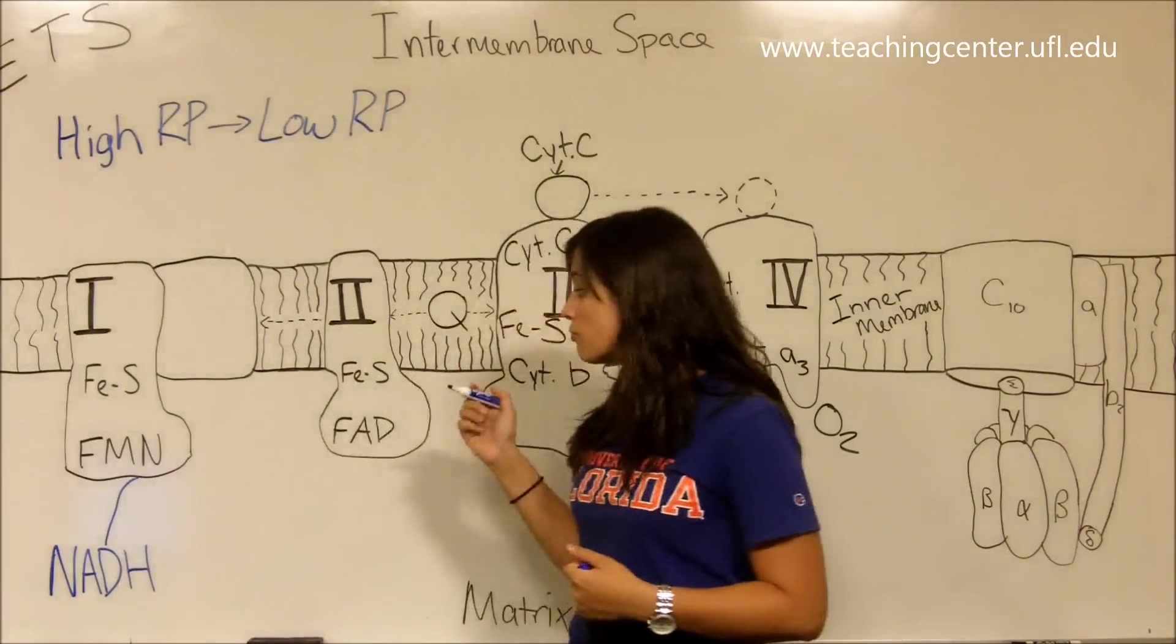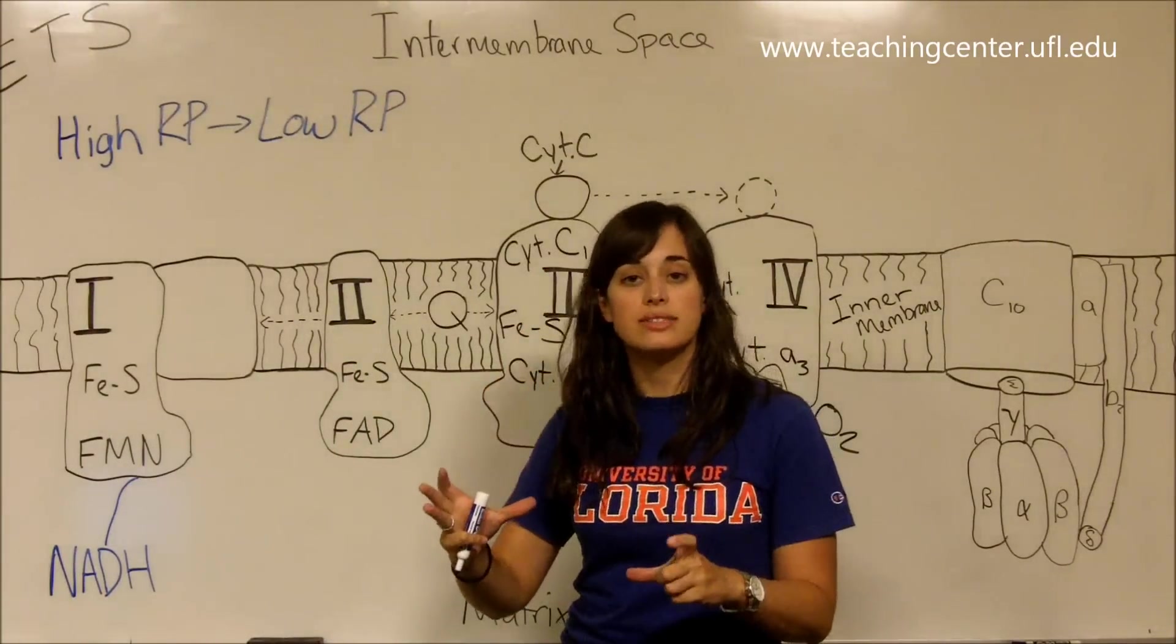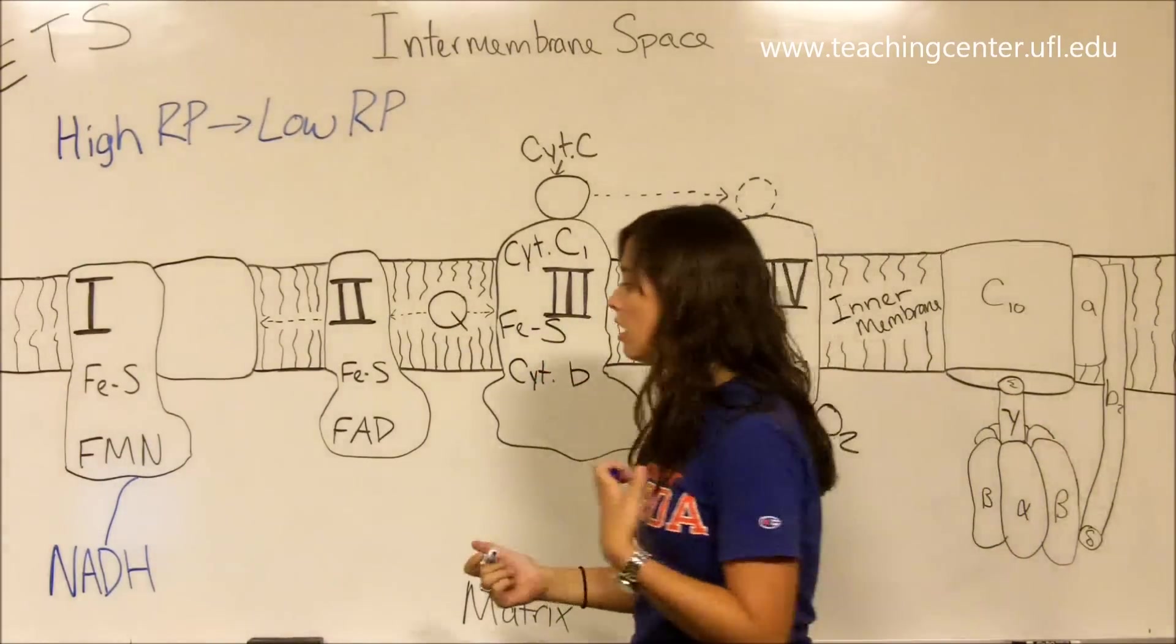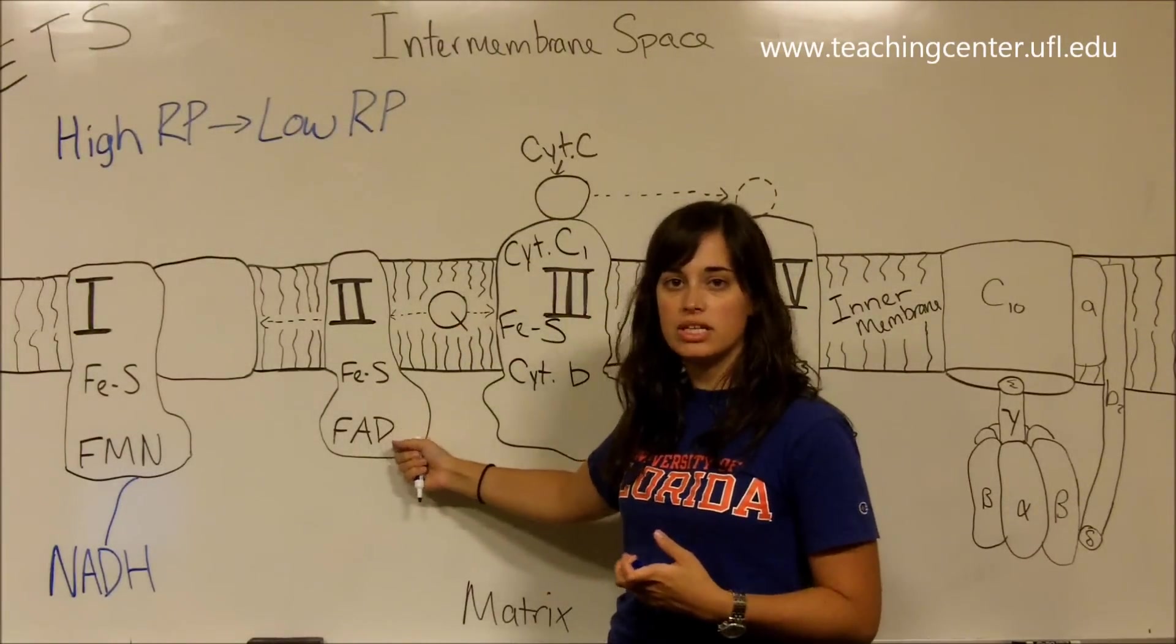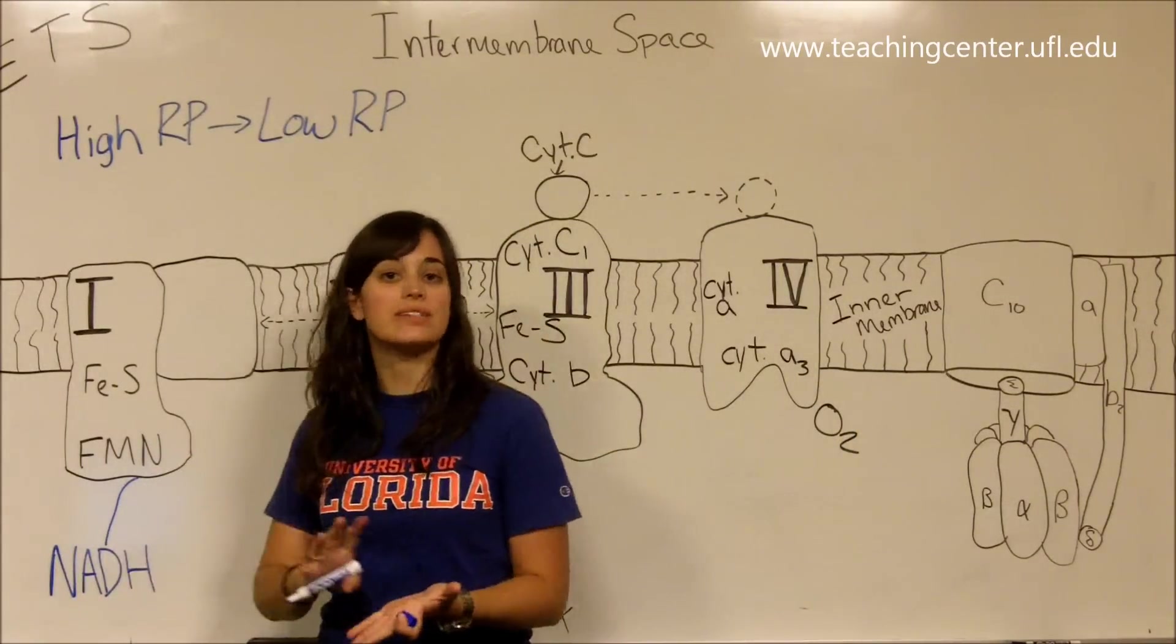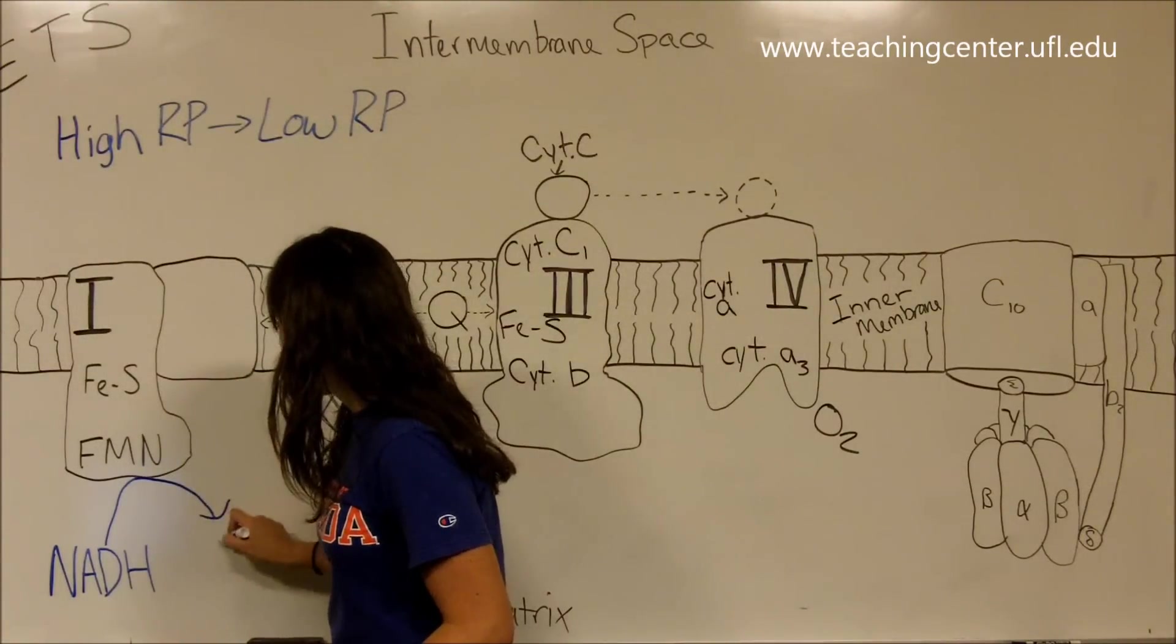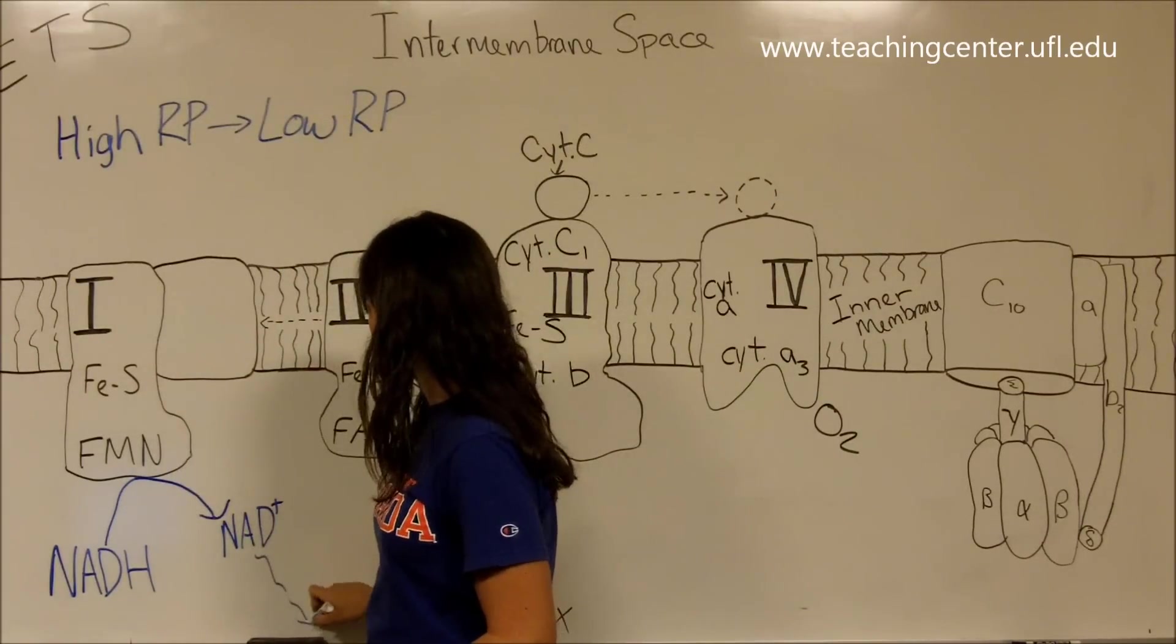What NADH does is it's going to donate its electrons to this flavin mononucleotide right here, FMN. Flavin mononucleotide has two components to it. It has an isoalloxazine ring and it also has ribitol. What you have to remember is it's that isoalloxazine ring that's sort of doing the action there. It's closely related to FAD. FAD is the dinucleotide. It has an adenine in there as well.